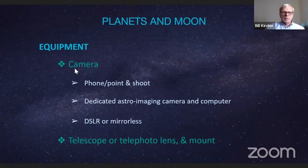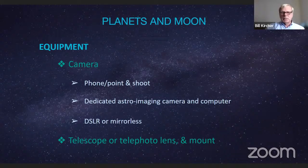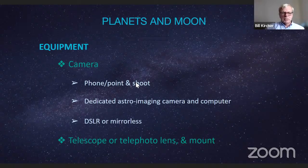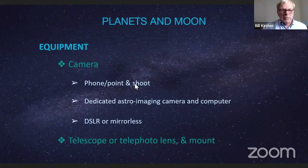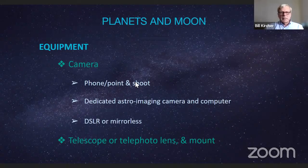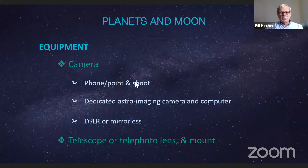Let's go on to planets and the moon. You can use any kind of equipment we've discussed — cell phone, dedicated astroimaging camera, DSLR, mirrorless camera. For most of this you need a telescope or a suitable telephoto lens and a mount to hold it steady. For some of this you actually need a mount that is motorized — it will move with the image, tracking the object as it moves across the sky.